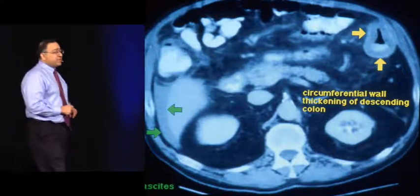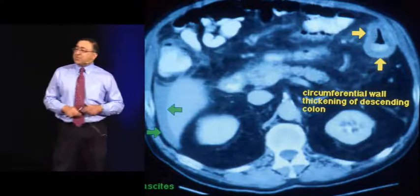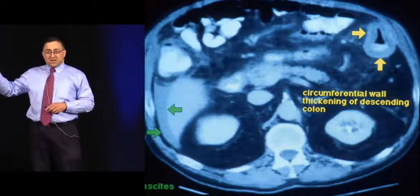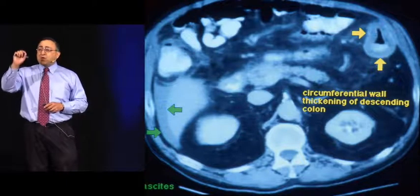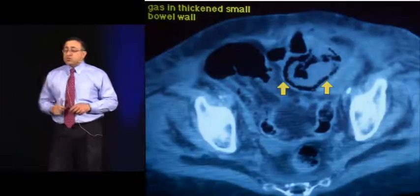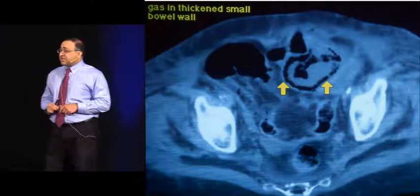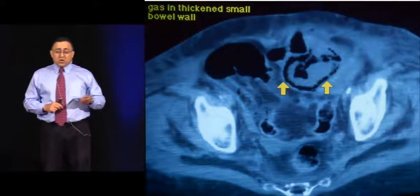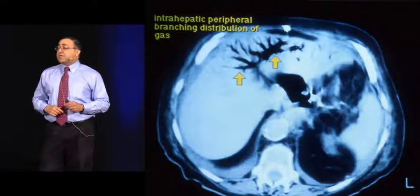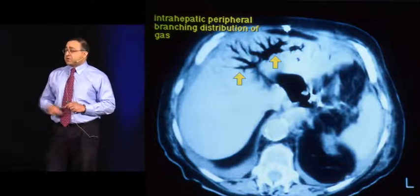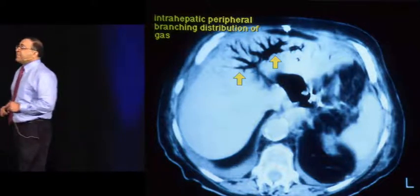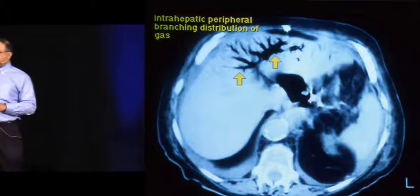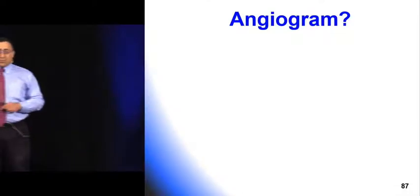CT scans really show just how thick the bowel wall is — normally paper thin. You can also get air within the thickened bowel wall, called pneumatosis intestinalis. You may see air within the hepatobiliary system on CT. If you see air in the hepatobiliary system, think emphysematous cholecystitis and mesenteric ischemia — either way they're going to the operating room.